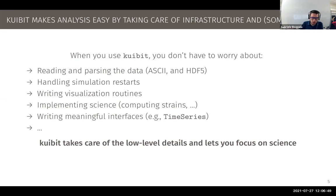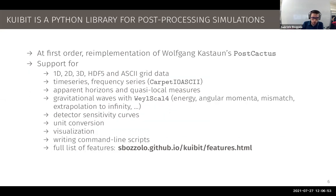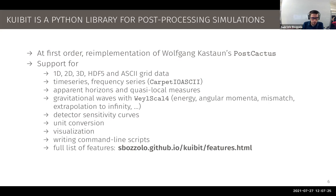As was mentioned in the previous talk, Qubit is a re-implementation of Wolfgang Kastaun's post-Cactus. The design is very similar in many ways — some function and structure names are the same, many algorithms are the same, but there are also many differences. Qubit supports: working with grid data in 1D, 2D, and 3D as HDF5 files; time series and frequency series; horizons; gravitational waves; detectors and their sensitivity curves; unit conversion; visualization; and utilities for writing common analysis scripts.